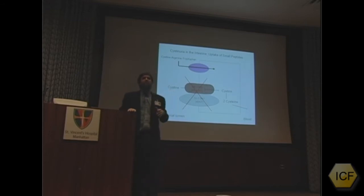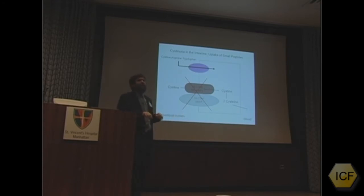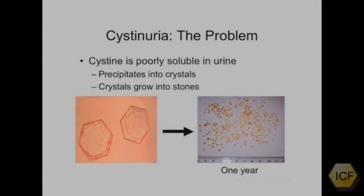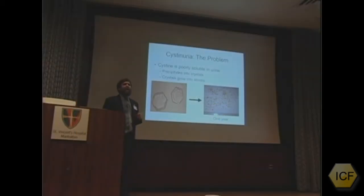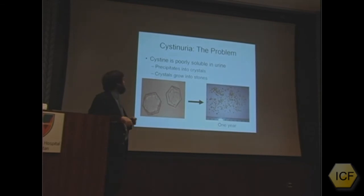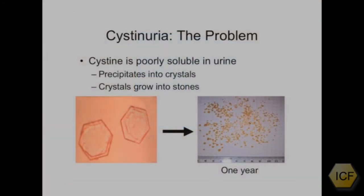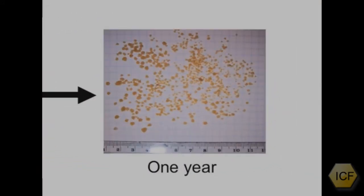The evidence that people with cystinuria who are losing cysteine in the urine have some deficiency of cysteine is quite sparse and unconvincing. The problem is simply that cysteine is poorly soluble in the urine. You're losing this cysteine, and the simple problem is that we have a molecule that is not easily dissolved. These cysteine crystals — those six-sided crystals commonly seen in the urine — turn into those stones.